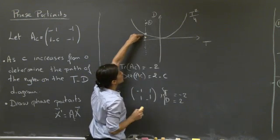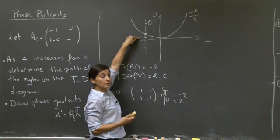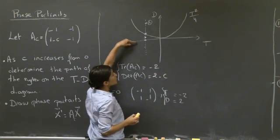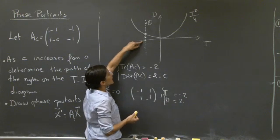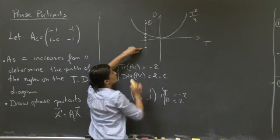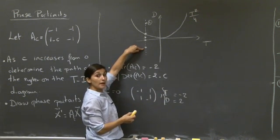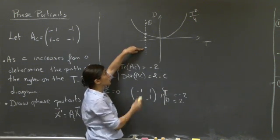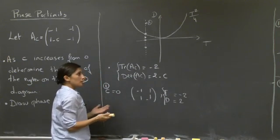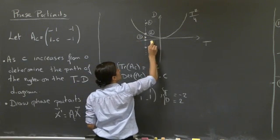As we continue increasing C, we enter the wedge area where we have real eigenvalues both negative, giving stability — essentially a sink. Then we cross another borderline case where the determinant equals 0, giving one eigenvalue equal to 0 and one negative. Beyond that, the determinant becomes negative and the trace remains negative, giving a saddle structure with one negative and one positive eigenvalue. Let's go through these five cases in more detail.